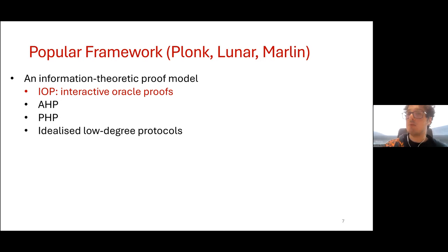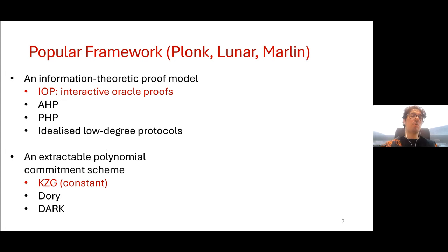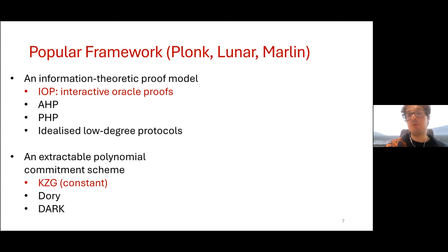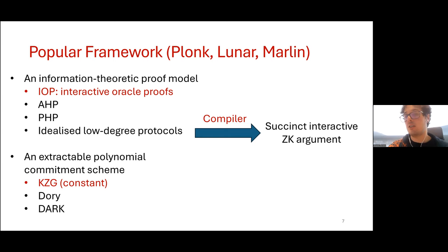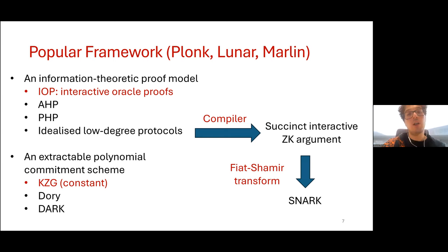There exists a popular framework that has been successful in designing these kinds of SNARKs — the one used in Plonk, Lunar, and Marlin. This framework consists of taking two primitives. The first is an information-theoretic proof model, such as IOPs (interactive oracle proofs). The second is an extractable polynomial commitment scheme, such as the KZG commitment scheme that we care about today — we use KZG because it achieves constant size proof and verification complexity. We take these two primitives and compile them into a succinct interactive zero-knowledge argument, and then apply the famous Fiat-Shamir transform to remove interactiveness and end up with a SNARK.